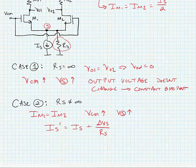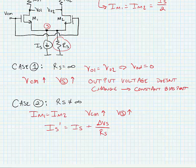What we can see here is that if the source current changes, then the output voltage is going to change. The output common mode voltage is going to change, so the bias point changes.